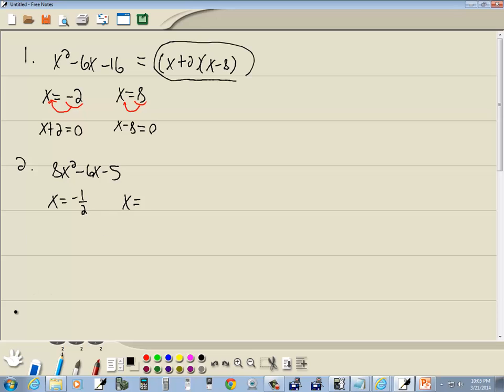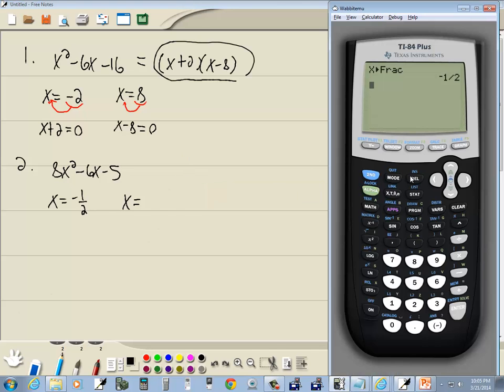Now, we've got another answer. So, let's do it again. We'll do second trace. Choose intersect. Enter on first curve. Enter on second curve. And let me put in 2 for the guess. We want to input an x value close to our answer. Answer is where it crosses the x-axis. So, I'll put in 2 and then press enter. And we get 1.25.